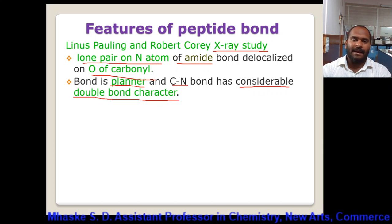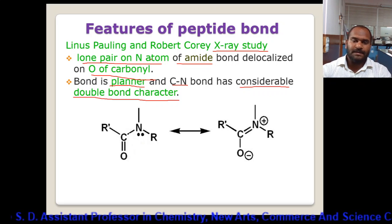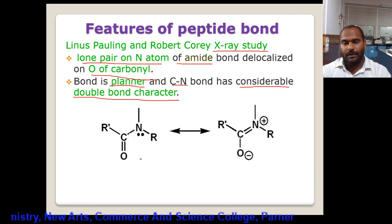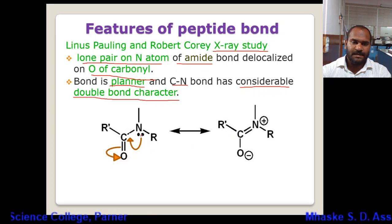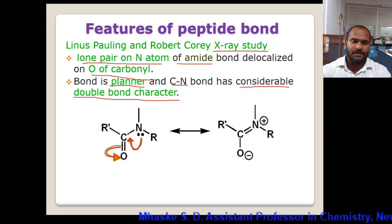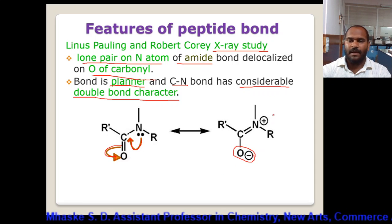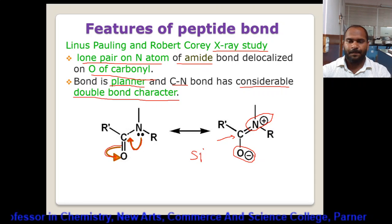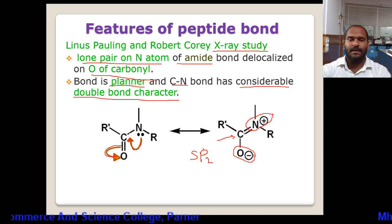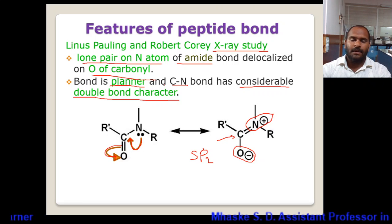The delocalization happens from the nitrogen lone pair, which shifts onto the carbonyl and further delocalizes onto the oxygen atom. This results in a negative charge on the oxygen and a positive charge on the nitrogen. This gives formation of an sp2 hybridized carbon. This sp2 hybridized carbon is planar, and therefore the peptide bond has a planar nature due to delocalization.